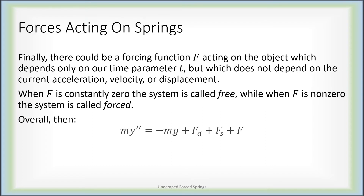Overall, the acceleration times mass — in other words, the force — is a sum of various terms: negative mg from gravity, Fd the damping force, Fs the spring force, and F the forcing function. But Fd was negative cy prime — the damping force was proportional to the velocity and in the opposite direction.